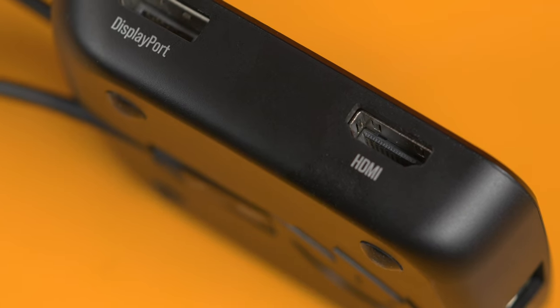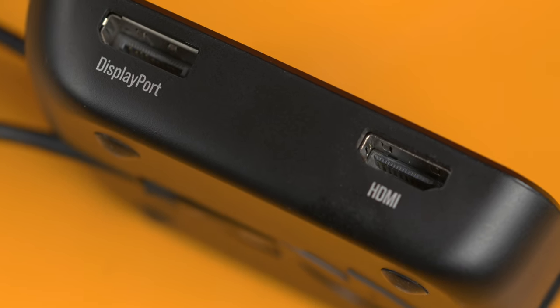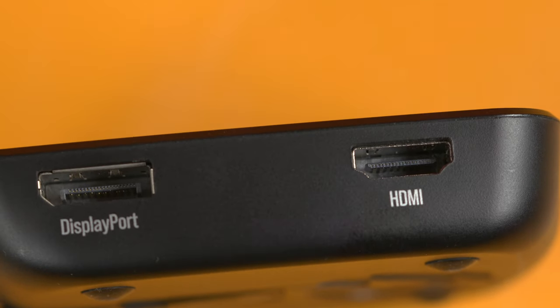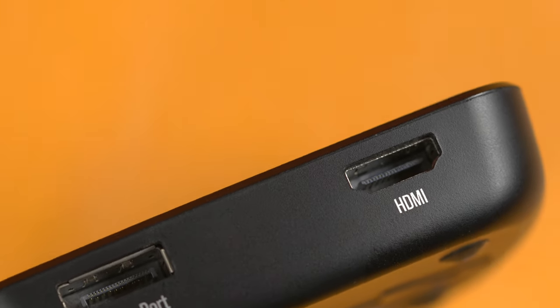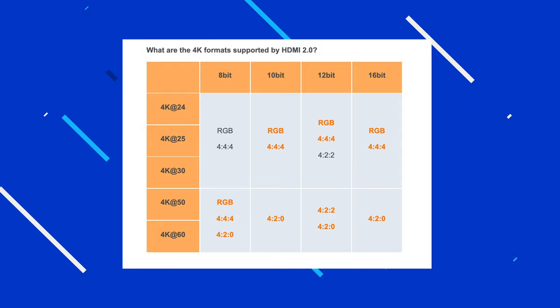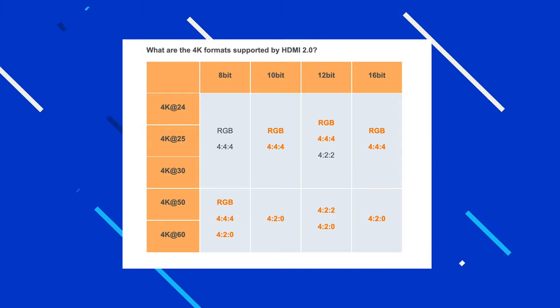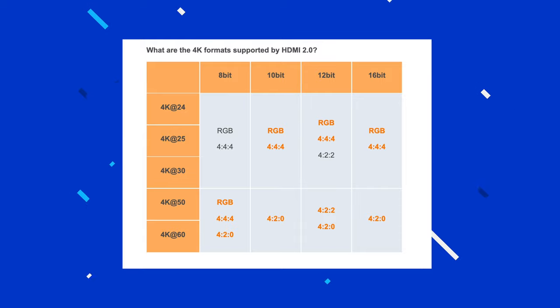In terms of pixel quality, HDMI 2.0 introduced support for 12-bit color. A 12-bit color display system has 4096 shades for each of the red, green, and blue channels, meaning support for 68 billion unique colors. HDMI 1.4, on the other hand, could only support an 8-bit color system, or 16.7 million unique colors.